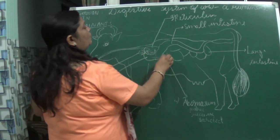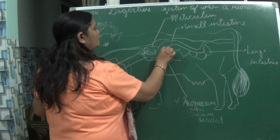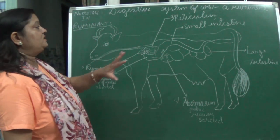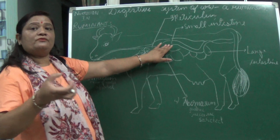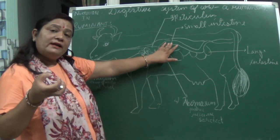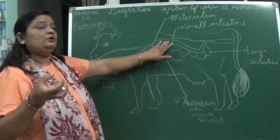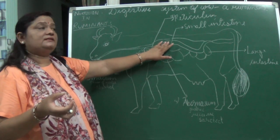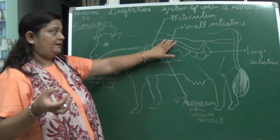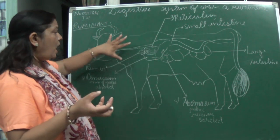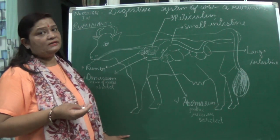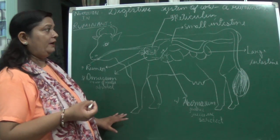From the stomach, the food is passed to the small intestine. Here complete digestion and absorption takes place. All the nutrients which have been digested are absorbed in the small intestine. This is how the whole digestion takes place in the case of ruminants.